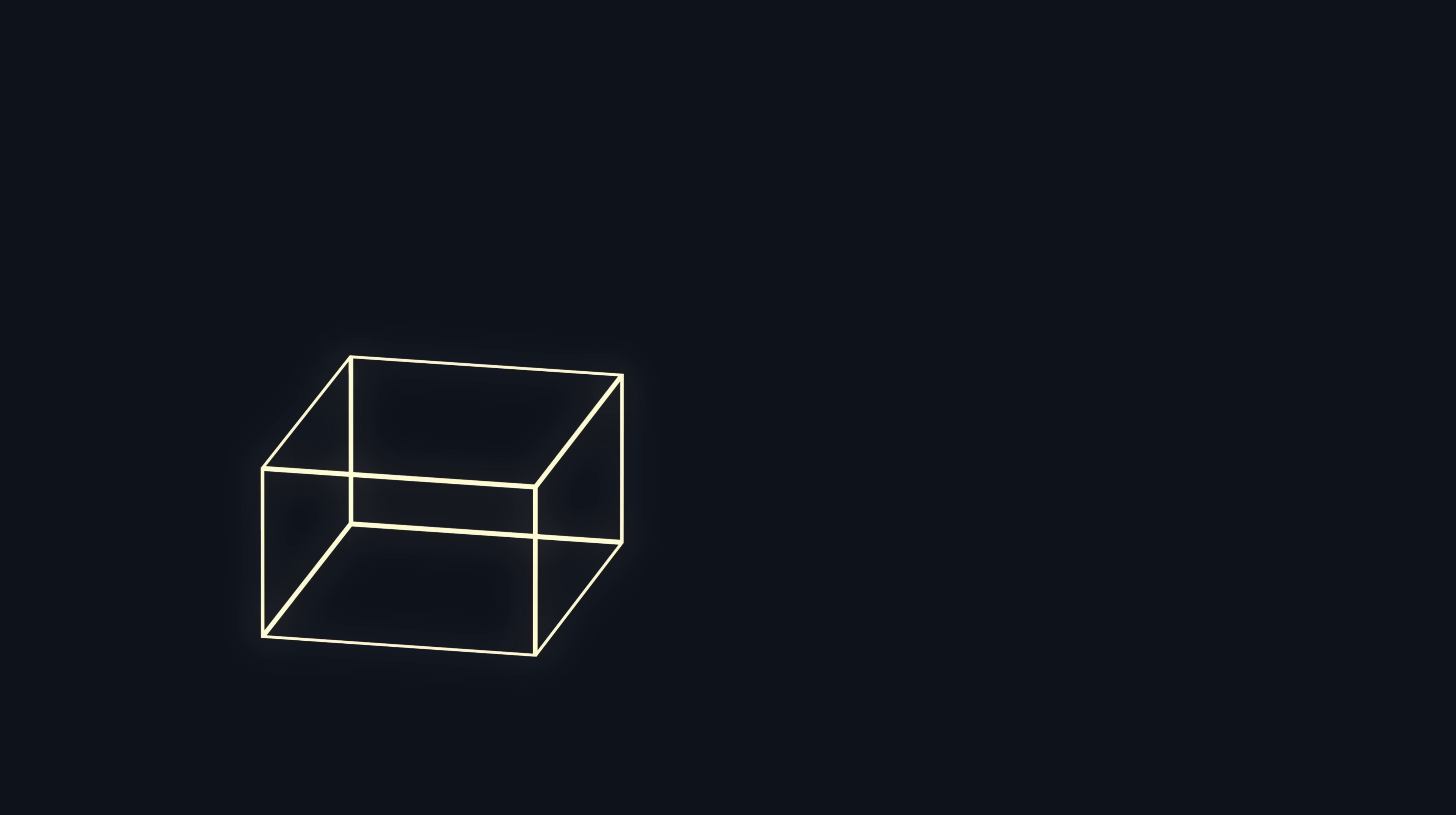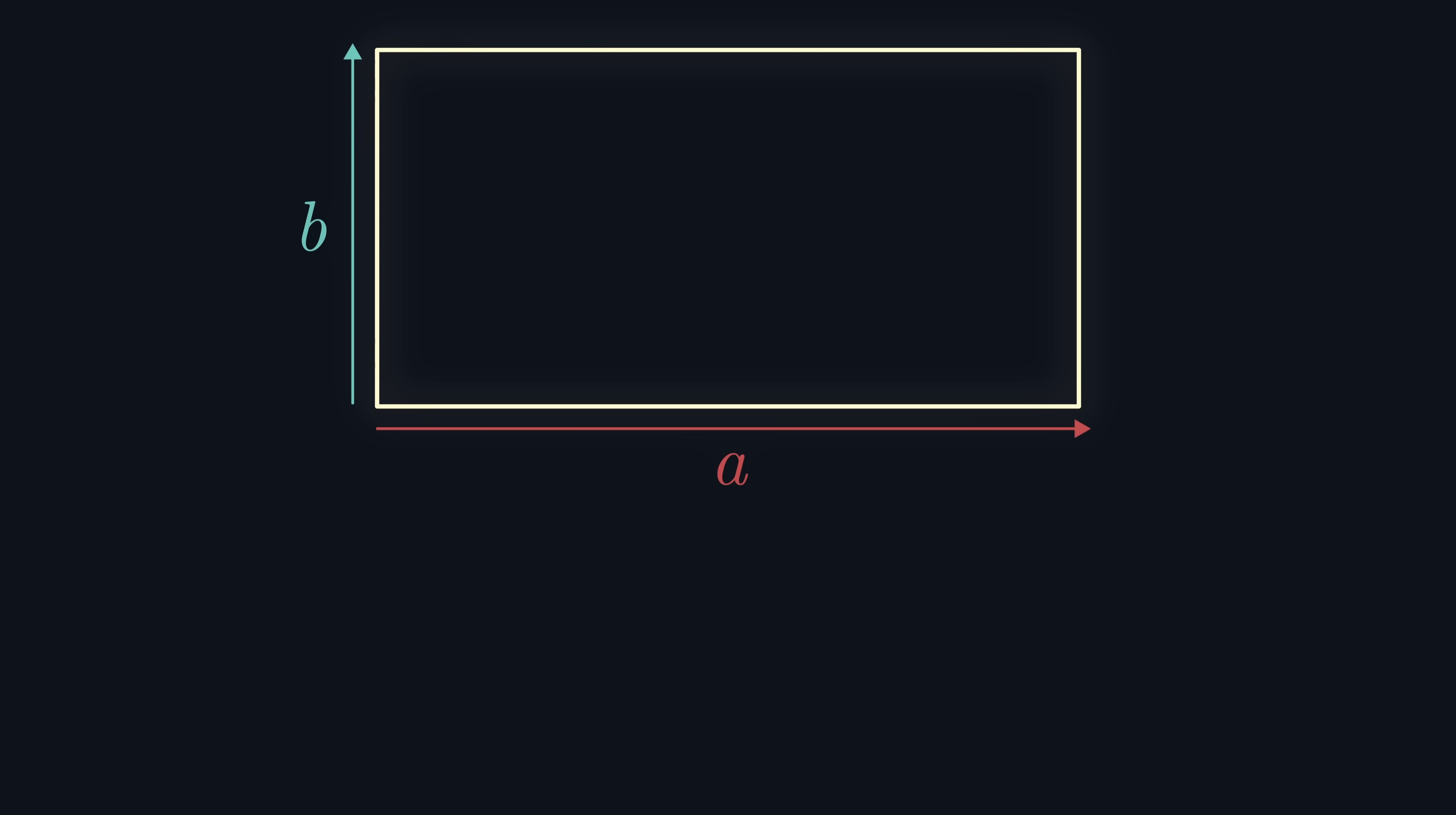As with any problem like this, we can gain some insight by looking at a simpler case. In particular, it makes sense to bring this question from 3D into 2D and consider a rectangle rather than a cuboid. Now, we're looking for a rectangle whose area and perimeter are numerically equivalent.